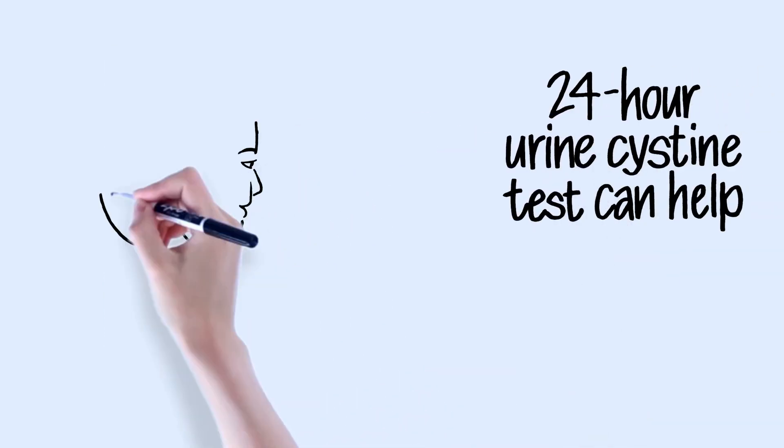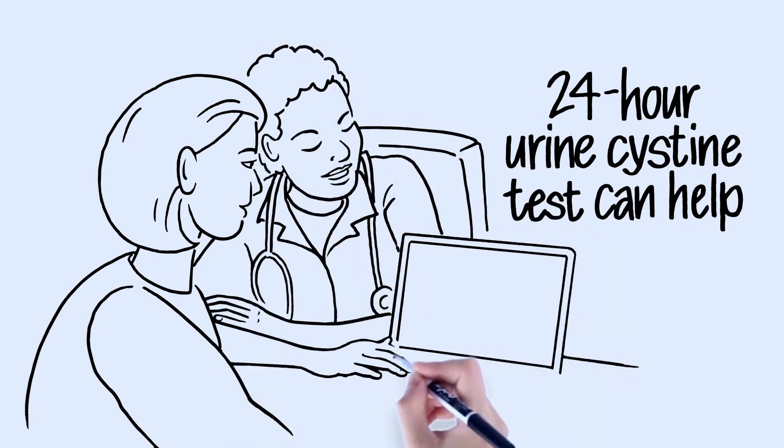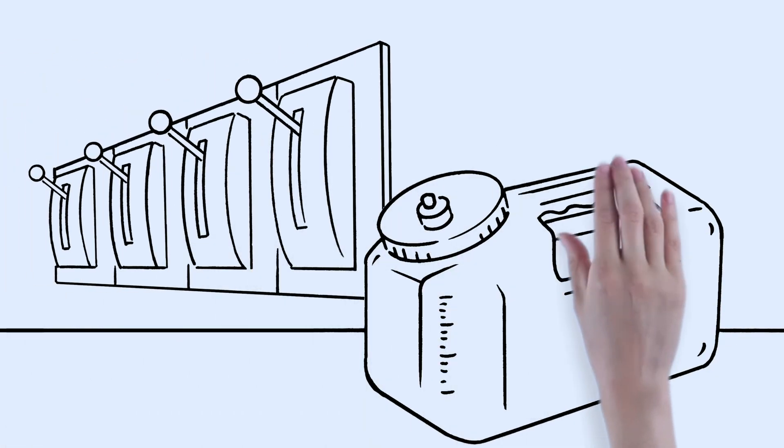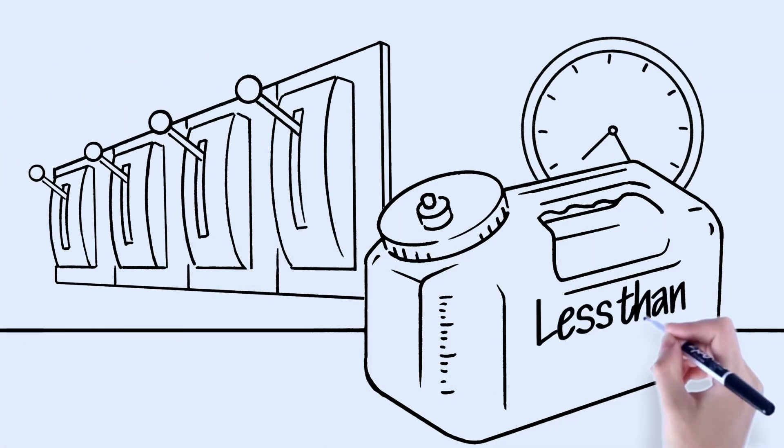Leslie works with her doctor and uses the results of her 24-hour urine cystine test to monitor her cystine level. They can then work to adjust these four levers to keep her cystine level under 250 milligrams per liter.